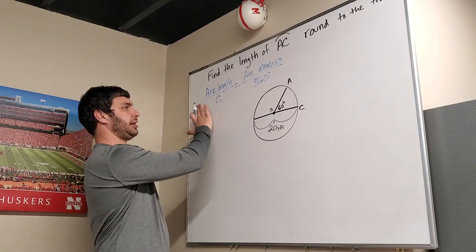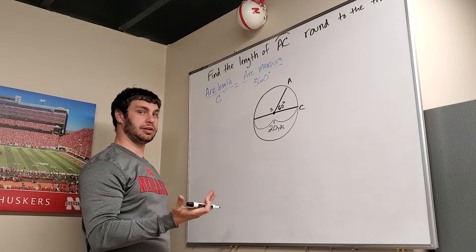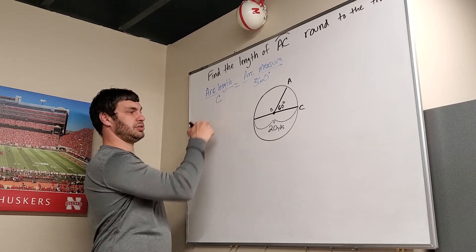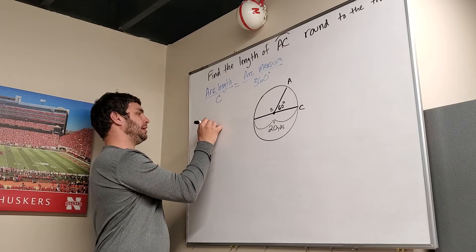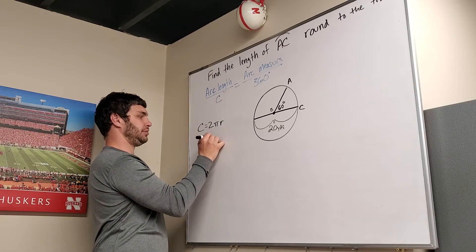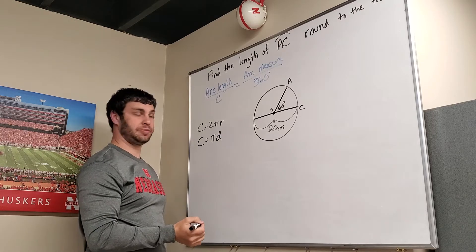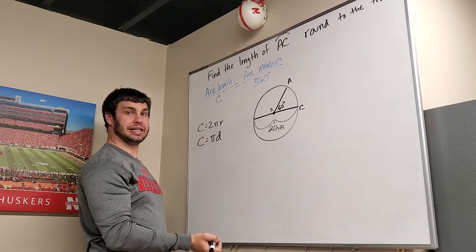First off, we have our equation that we're going to use to find arc length. And that uses circumference. So if I find that right away here, remember, circumference equals either 2 pi r, or you could say circumference equals pi d, where d is the diameter, because 2 times the radius is the diameter.